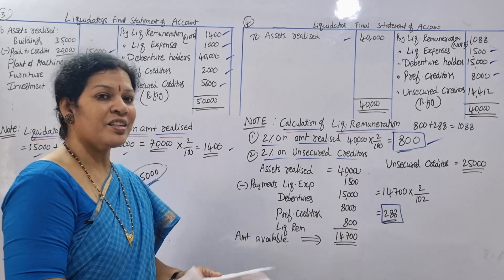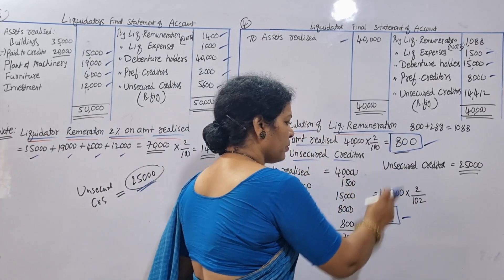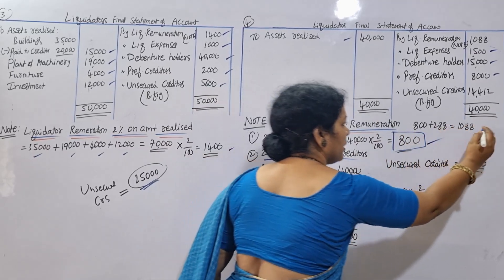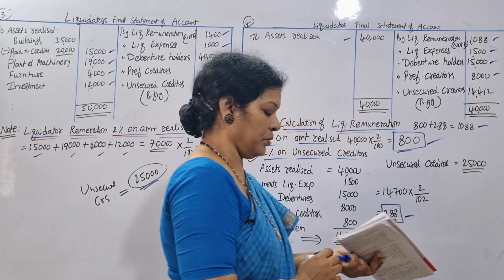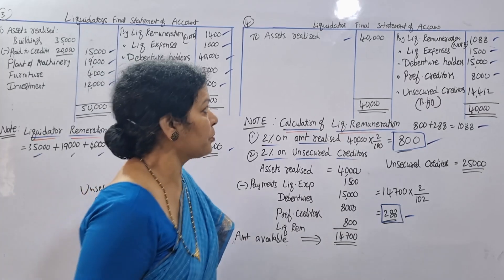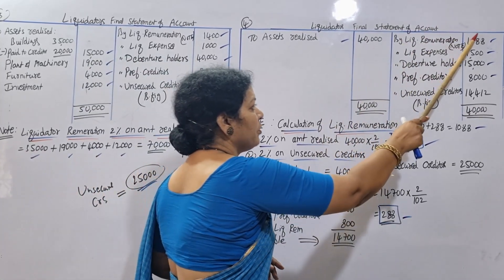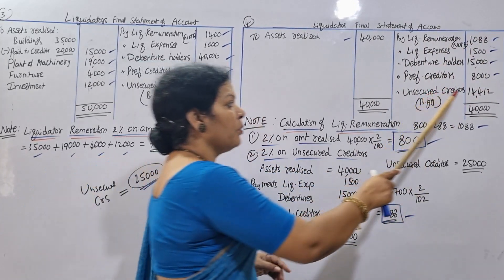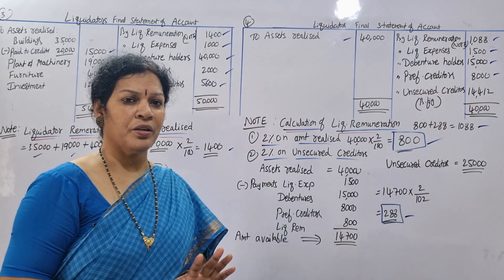This is the second commission. $800 plus $288 comes to $1,088. That total remuneration of $1,088 is entered. Then $40,000 minus all four payments leaves $14,412.